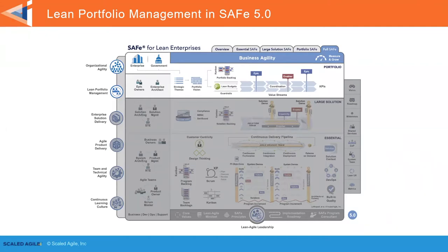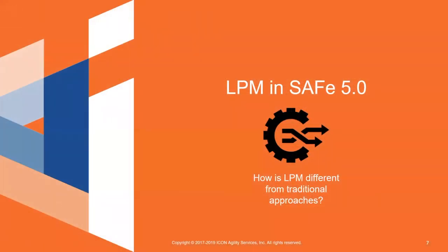Two of the most exciting changes in SAFe 5.0 are the expansion into business agility and the use of OKRs — objectives and key results — as part of the strategic themes. That offers organizations a way to use a popular technique within the SAFe framework. It's also important to note that Portfolio SAFe is the most basic configuration required in order to achieve business agility.